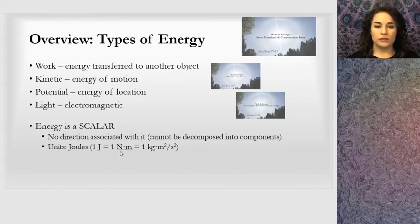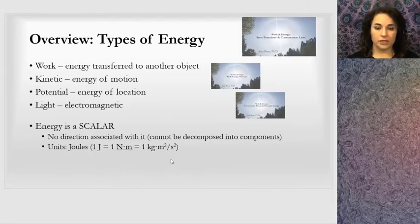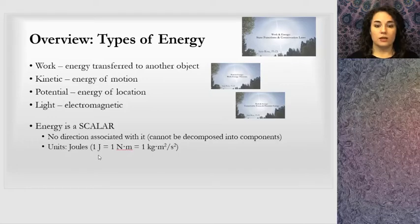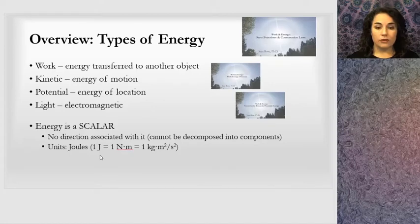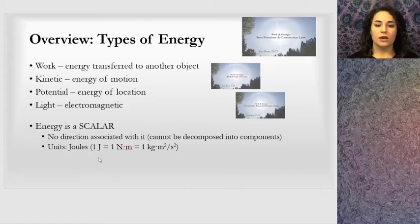A newton can be reduced down to more basic units: kilogram meter per second squared times another meter gives us meter squared. So joules is the SI unit for energy. You may see it in other forms — for instance, when you move forward in the curriculum you get to electron volts, which is also a form of energy. But joules is SI.